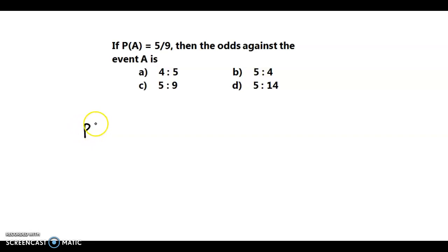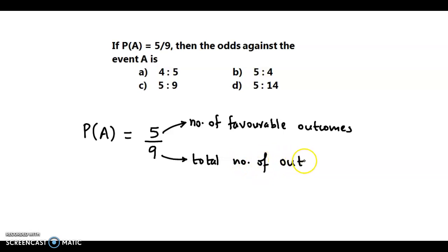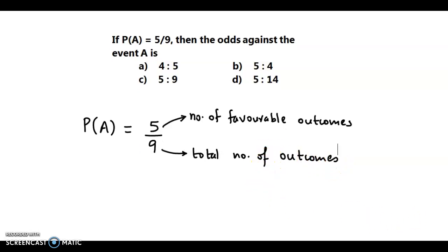Now we have been given probability of A as 5 by 9. The numerator indicates the number of favorable outcomes, and the denominator indicates the total number of outcomes. So in other words, if we have 9 outcomes.